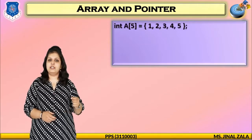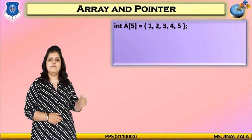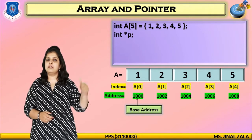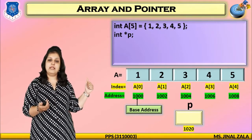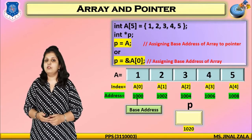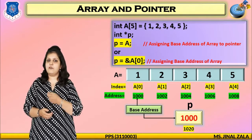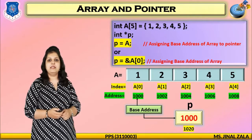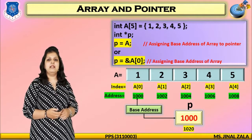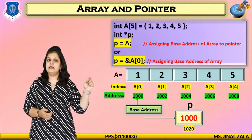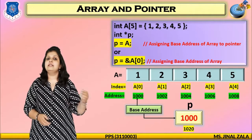Here, integer A[5] is initialized with five elements at compile time. One pointer is declared as integer star P. Why integer? Because our array data type is integer, so our pointer data type is also integer. I want to assign the base address of the array, so P is equal to A. The ampersand symbol is not mandatory here. P equals A assigns the base address of the array to the pointer variable, which is similar to P equals ampersand A[0]. Both have the same meaning.